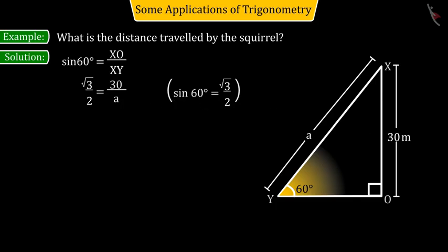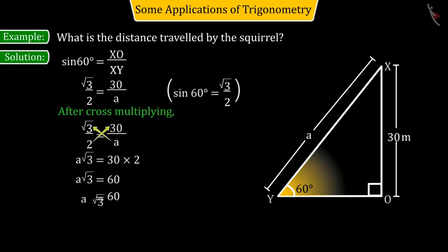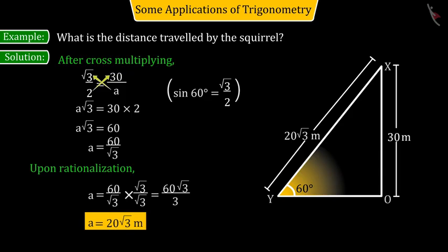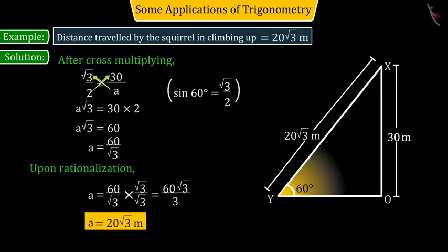when we solve, we get the value of A as 20 square root 3. So, we can say that the distance covered by the squirrel in climbing up will be 20√3 meters.